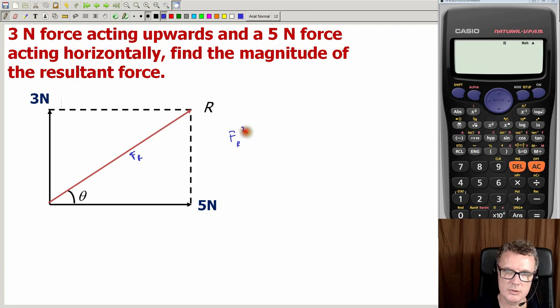FR squared equals force along the bottom, 5 squared, force along the side, 3 squared. So what's it going to be?